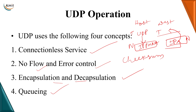So this was about the transport layer, where we talked about process-to-process delivery, port numbers, socket addresses, the User Datagram Protocol, its services, and its operation. Thank you.